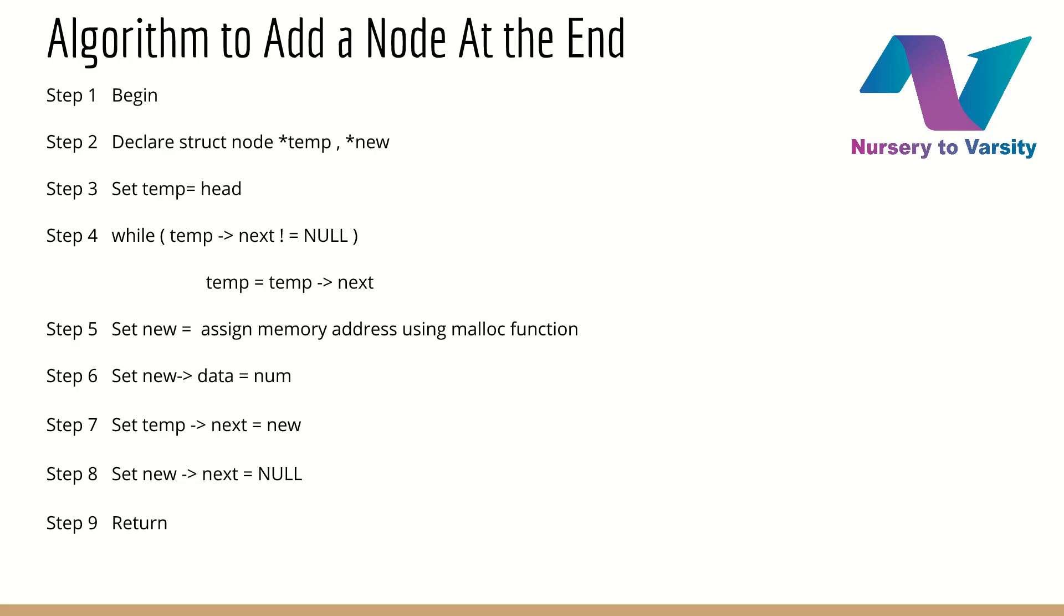By the end of the while loop, this temporary variable will contain 4001 according to our example. Step 5 is, we are creating a new node, which we want to insert at the end, by assigning memory address using malloc function. Step 6 is, set num in the new arrow data. Then, step 7 is, we have to add the newly created node after end. So, take temp arrow next equal to new, so after this, now the new node will become the last node.